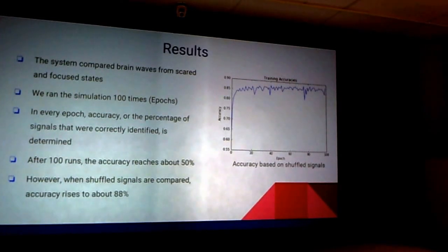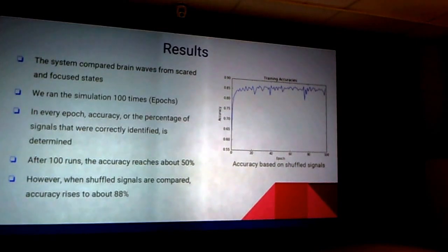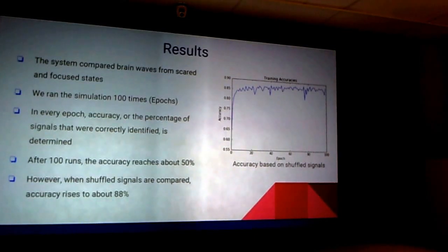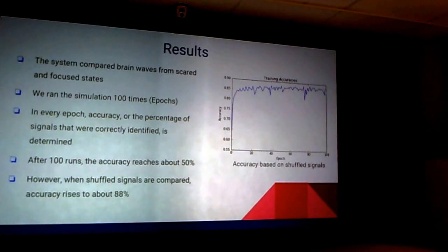The network thinks the difference it sees is the actual difference between conditions, when the actual difference is much smaller. When the shuffled signals were compared, accuracy rose to about 88%. Currently we're working to filter the data so the network can more efficiently recognize true patterns in the brain waves.